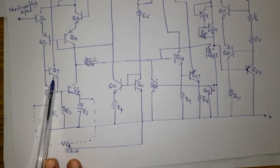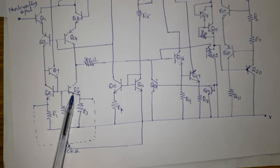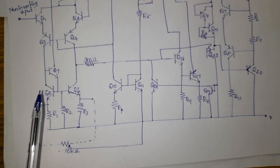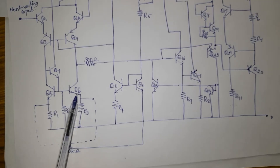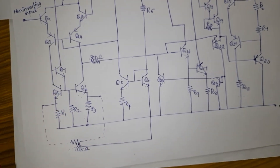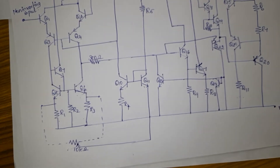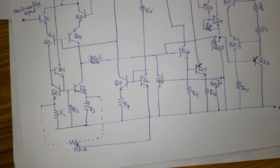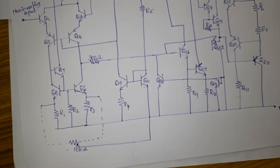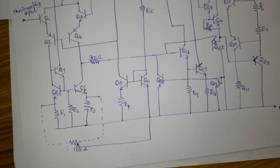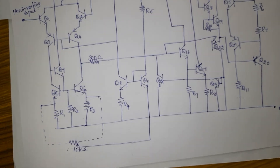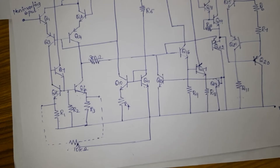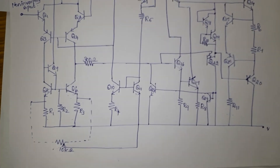Transistor Q7 supplies the base current to transistors Q5 and Q6. The base current and hence the collector current of Q5 and Q6 must be equal at all times when transistors Q5 and Q6 are identical. Any change in Q5 collector voltage produces identical changes in the collector currents of Q5 and Q6 via transistor Q7.